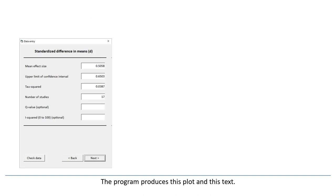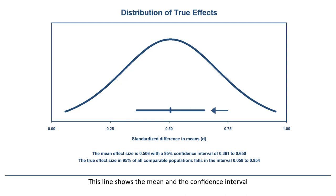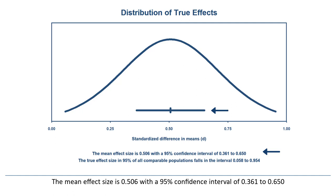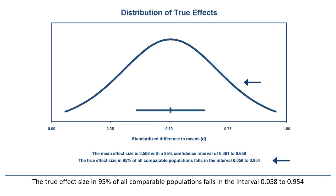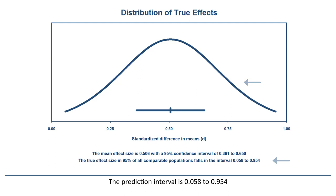This line shows the mean and the confidence interval. It corresponds to this caption, which reads: The mean effect size is 0.506 with a 95% confidence interval of 0.361 to 0.650. This curve tells us how the true effect size varies across populations. The curve is summarized by this caption, which reads: The true effect size in 95% of all comparable populations falls in the interval 0.058 to 0.954. The prediction interval is 0.058 to 0.954, which corresponds to the endpoints of this distribution.